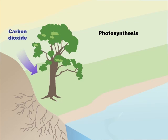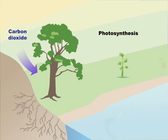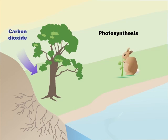Plants take carbon dioxide out of the air and use this carbon to build their leaves, stems, and roots. That means plants store carbon. When animals eat plants, they use this carbon for energy and to build their own bodies.